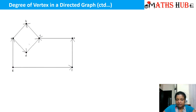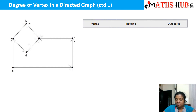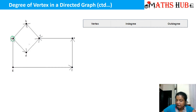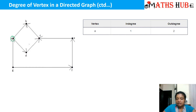Let's take a directed graph example and calculate using a table of in-degree and out-degree for each vertex. For vertex A, one edge is moving in so in-degree is 1, and two edges are moving out so out-degree is 2. For vertex B, two edges move inside and none move out, so in-degree is 2 and out-degree is 0.